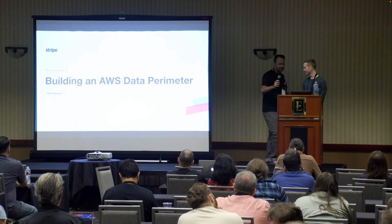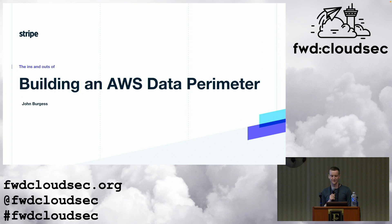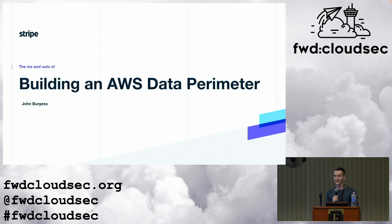Without any further ado, I'm going to hand it over to John. Hello, I'm John Burgess. I'm a cloud security software developer at Stripe. Stripe's mission is to increase the GDP of the internet. We do payment processing and a bunch of other things for millions of businesses. Today I'm going to be talking about the ins and outs of building an AWS data perimeter. This topic is way too big for a 20-minute talk, but I will do my best by providing a comprehensive introduction.